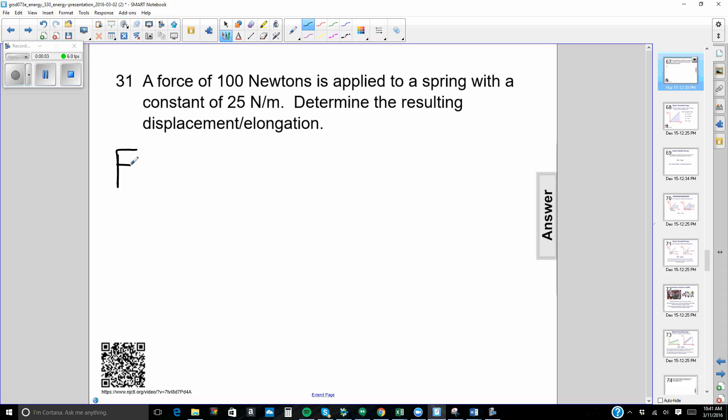A force of 100 newtons is applied to a spring with a spring constant of 25 newtons per meter, so that means our k value is 25 newtons per meter. We want to determine the resulting displacement or elongation of the spring, so we're looking for x.